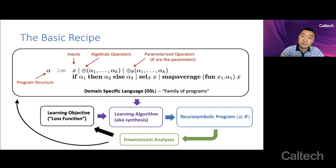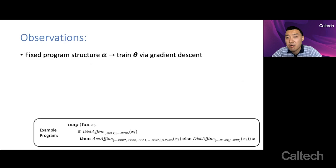A few observations. First of all, if the program structure alpha is fixed, then you can just train the continuous parameters of this neural symbolic program theta via gradient descent, just like in deep learning. And in fact, you can even define alpha just as a straight-up deep neural network, in which case this reduces completely to standard deep learning.